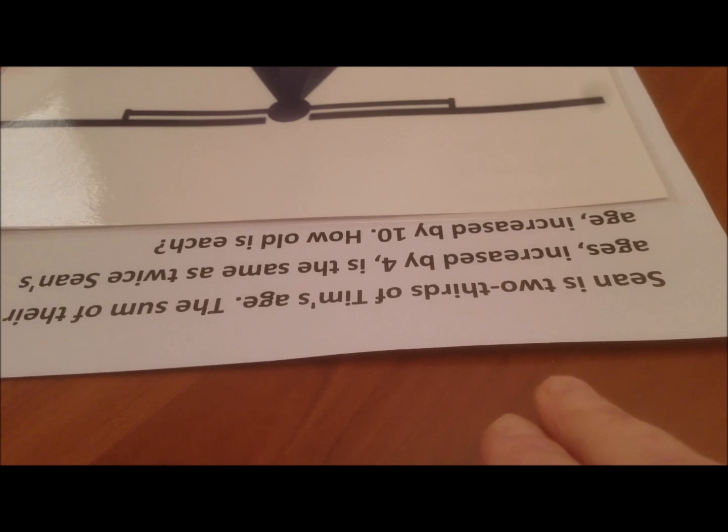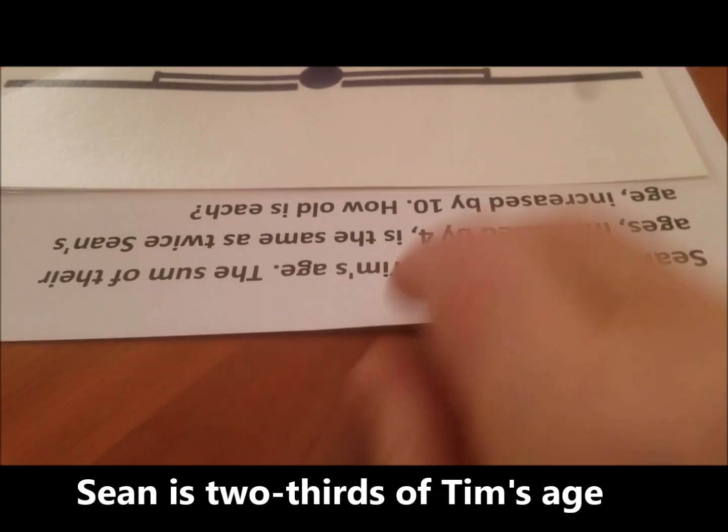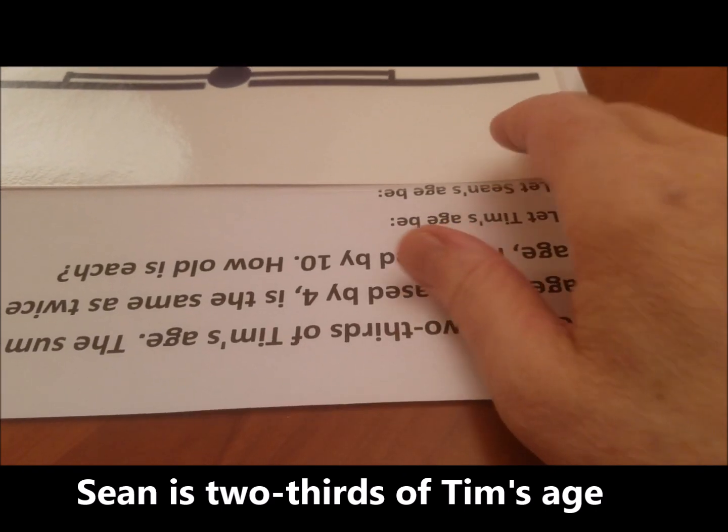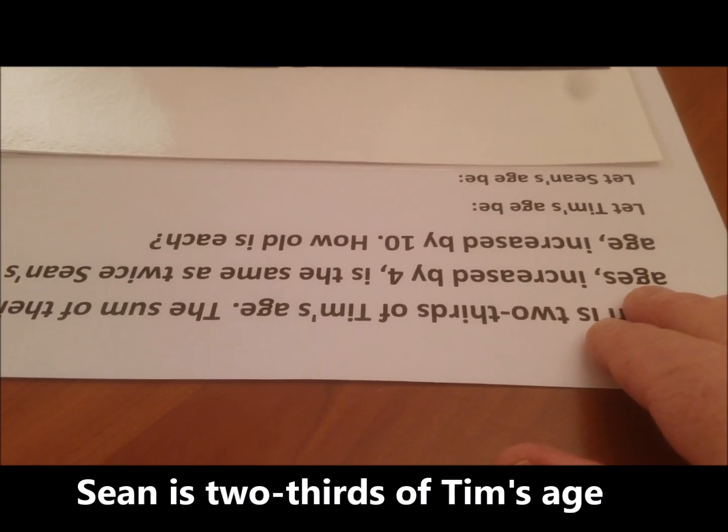Please help me with this example. We are told that Sean is two-thirds of Tim's age. How would you like to represent Tim's age and how would you like to represent Sean's age? Sean is two-thirds of Tim's age.